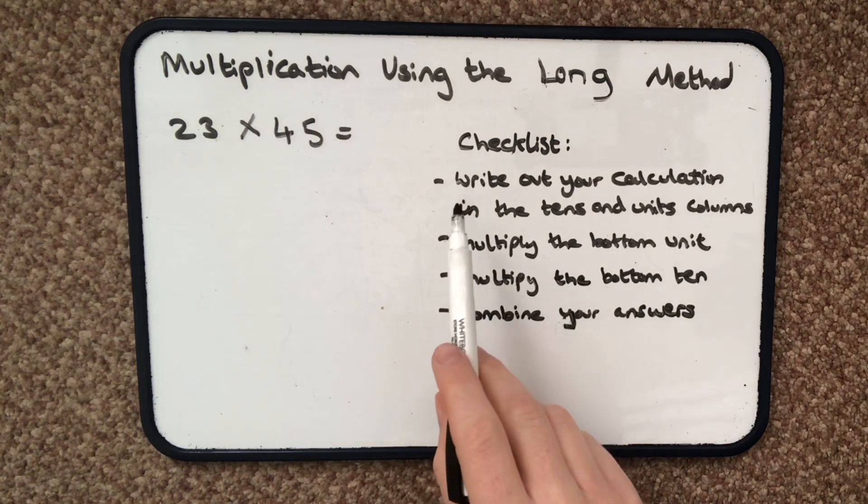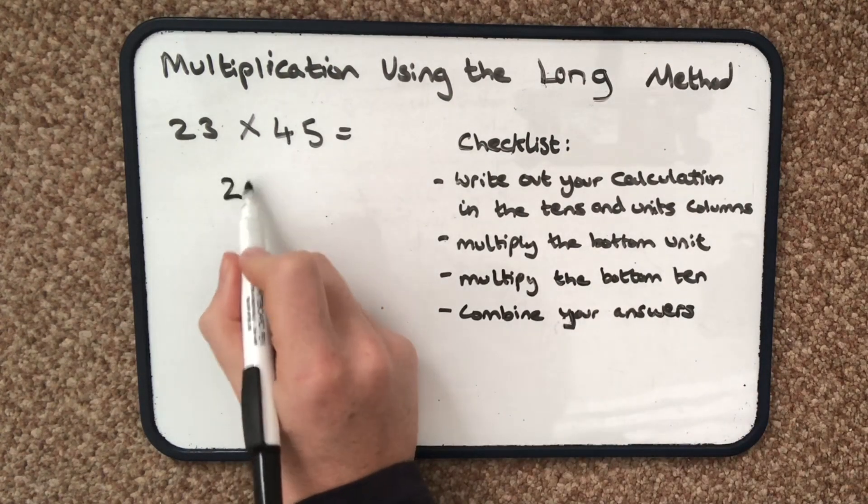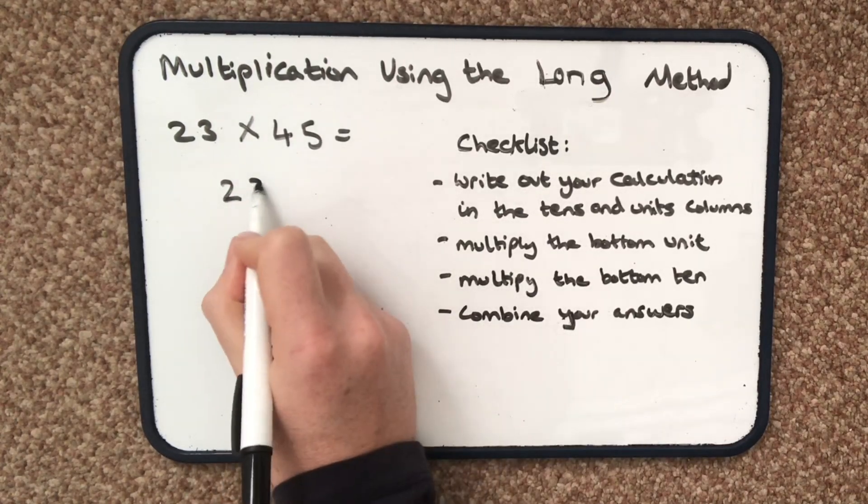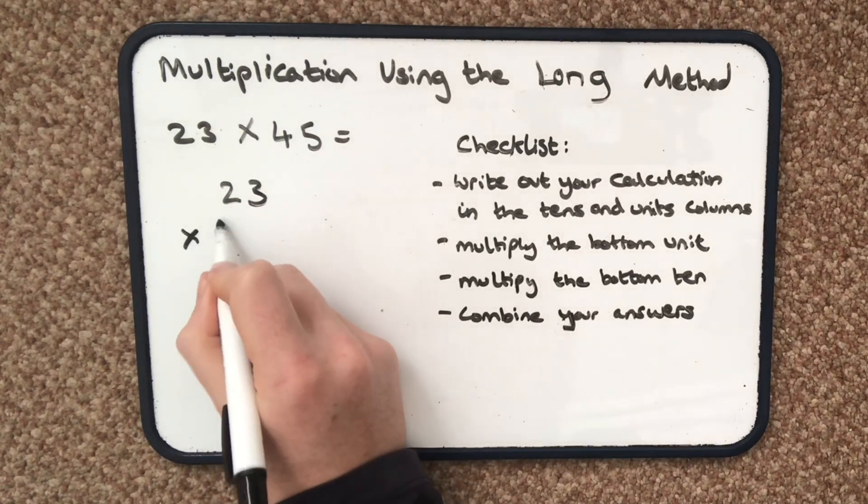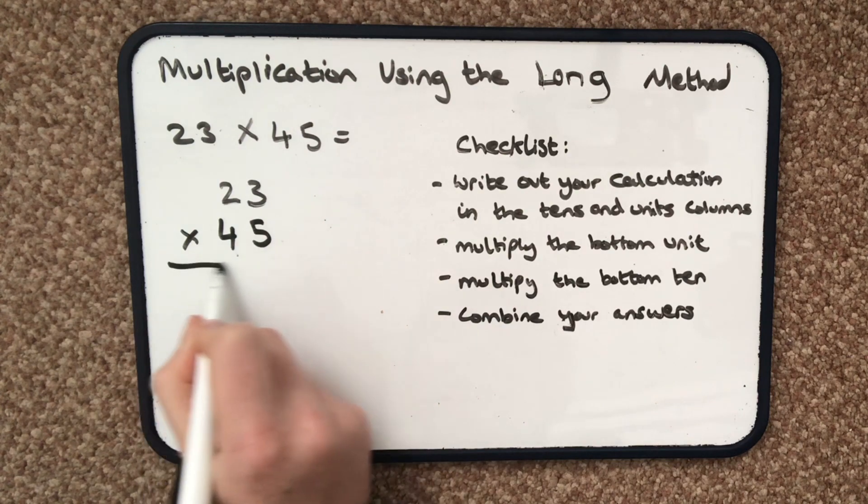So first of all it says write out your calculation in the tens and units columns. So 2 tens and 3 units multiplied by 4 tens and 5 units equals.